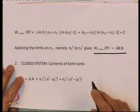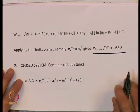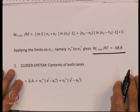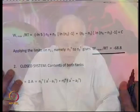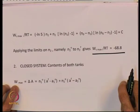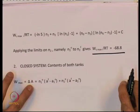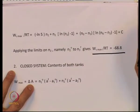This completes the open-system work calculation, where we tracked the differential work as gas transfers continuously between tanks and integrated it. Now the same result can be obtained another way. If you consider a closed system containing both tanks, thermodynamics tells us the maximum work done by the system is simply the change in Helmholtz free energy — in contrast to the open system case which used Gibbs free energy.